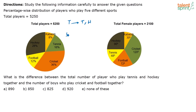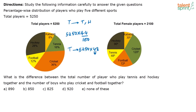That will be the total number of players who play tennis and hockey. Now you have to find out the number of boys who play cricket and football. The total number of persons who play cricket and football is 36 plus 12, that is 48 percent. So 5250 into 48 by 100 percent of people play cricket and football.